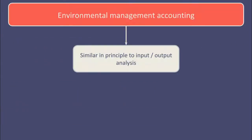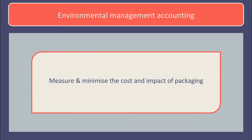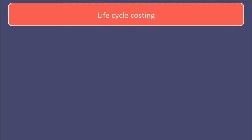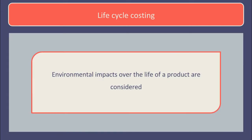Flow cost accounting is similar in principle to input-output analysis and seeks to measure and minimize the amount, cost and the impact of packaging. Life cycle costing is also relevant here. Traditionally environmental impact is associated with the production phases — growth and maturity. However, much of the environmental impact is due to decisions made at the development and introductory phases. In addition, decommissioning often has a significant environmental impact at the end of the product life cycle. Using life cycle costing should ensure that environmental impacts over the life of a product are considered and accounted for.